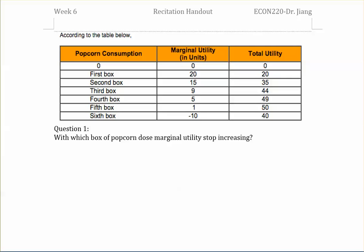When the marginal utility is larger than 0, then the total utility keeps increasing. When the marginal utility equals 0, then the total utility will reach its maximum amount. When the marginal utility is smaller than 0, the total utility keeps decreasing.